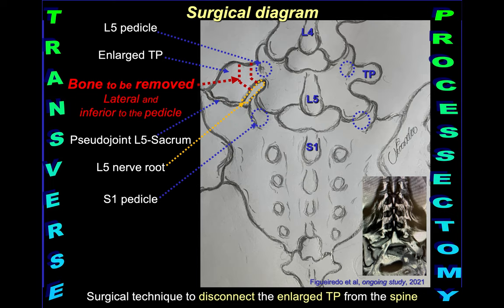We use this diagram to guide the preferred technique. You can see the L5 pedicle, the enlarged transverse process, and the bone to be removed marked in red dots, which is lateral to the pedicle and then inferior to the pedicle. The pseudo-joint should therefore be disconnected. The L5 nerve root is visible just close to the middle part of the enlarged transverse process and below the pedicle. We have to remember this anatomy, which becomes very clear during surgery but is more limited because of the tubular approach — we have a limited view, but we can have a good idea about these structures.